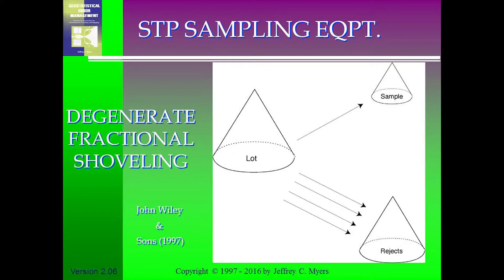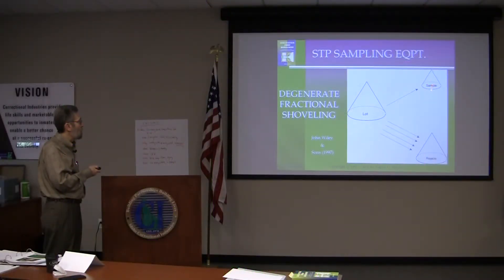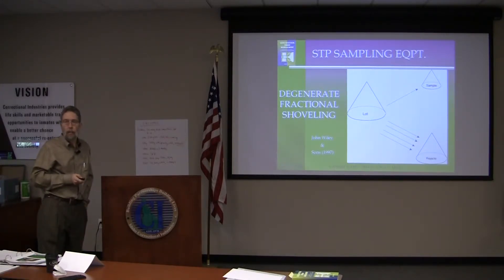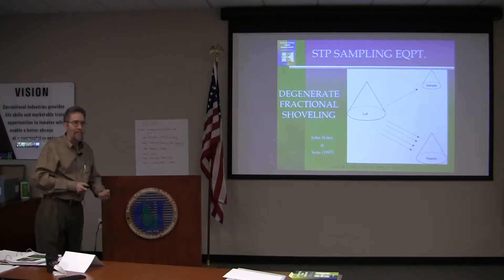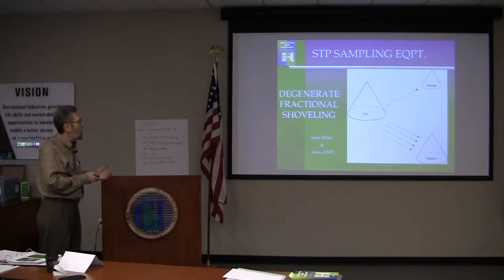People often use these techniques incorrectly. If you say you're going to make five shovels and every fifth one goes to the sample pile, you don't want to do that. We all have a subconscious bias when shoveling — we don't want to admit it, but it creeps in. This is a degenerate form. If you want to do four and one, make five piles and then select one. Don't put four scoops in one place and one over here.